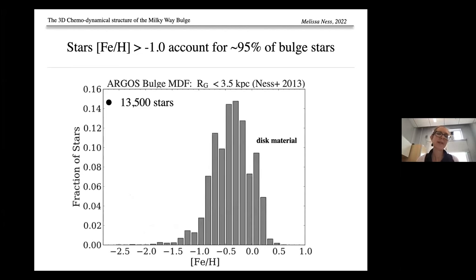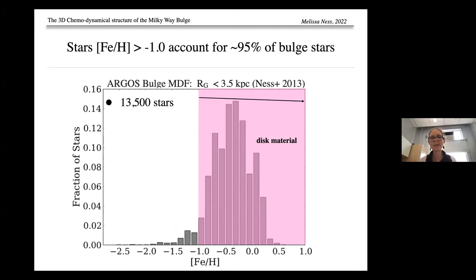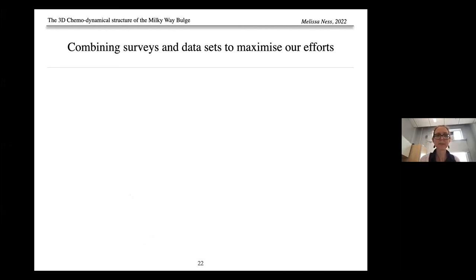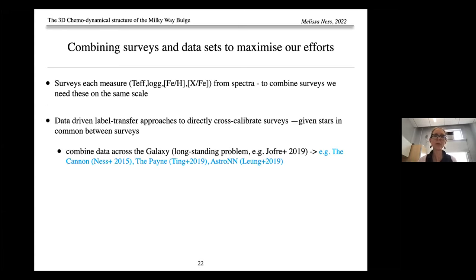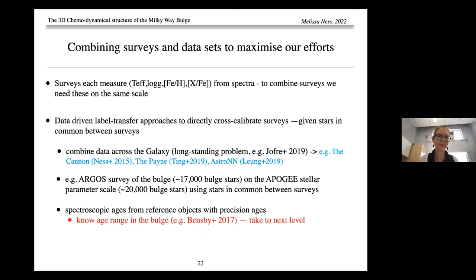Stars with metallicities greater than minus 1 account for the majority of bulge stars, and evidence points to these being primarily disk material. Moving forward, we need to combine surveys and data sets to maximize efforts. Surveys each measure temperature, gravity, metallicities, and individual abundances from stellar spectra. To combine surveys for analysis, these numbers must be on the same scale. Data-driven label transfer approaches have been developed to directly cross-calibrate surveys given stars in common, enabling us to combine data across the galaxy.